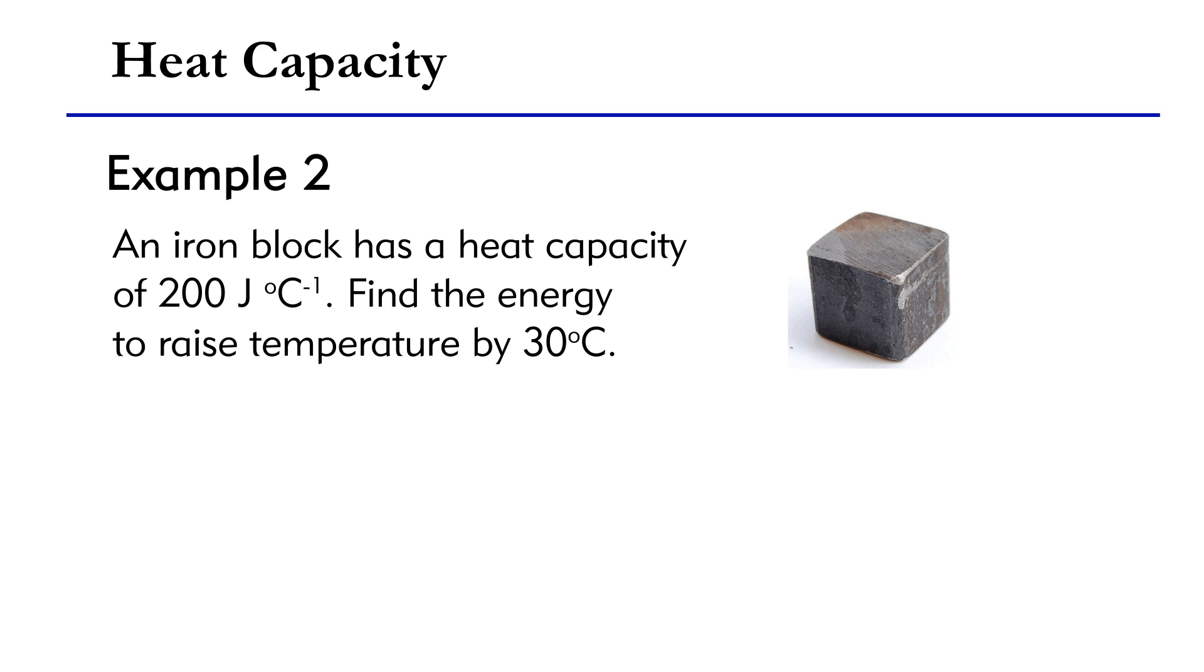Now, let's look at another example. Consider a block of iron. Given that the heat capacity of the iron block is 200 Joules per degree Celsius, how much energy is required to raise the temperature by 30 degree Celsius? From the equation C equals Q over delta T, we have Q equals C times delta T.